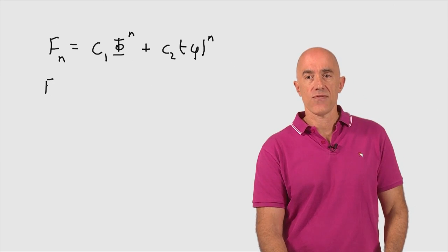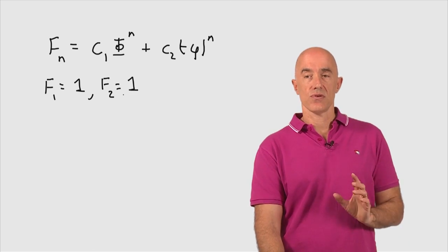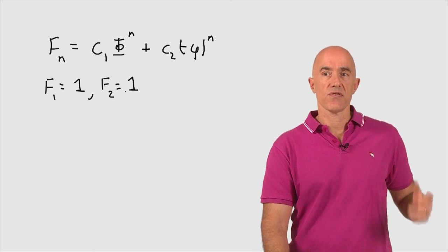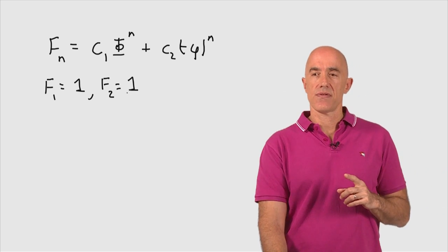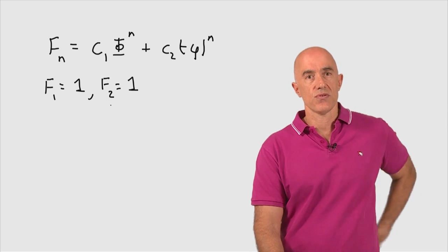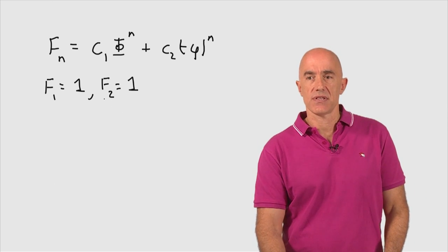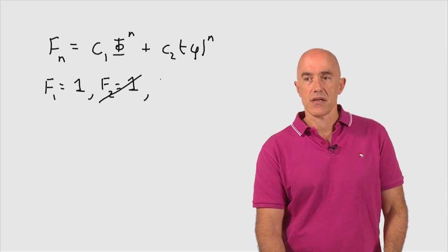So we know that F1 equals 1. We know that F2 equals 1. We can use these two initial values to determine c1 and c2, but then we have to deal with the golden ratio squared, n equals 2 here. It's actually easier if instead of using F2 equals 1, we use the value of F0.